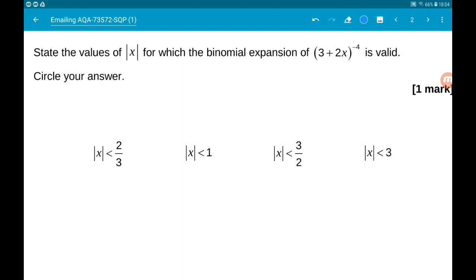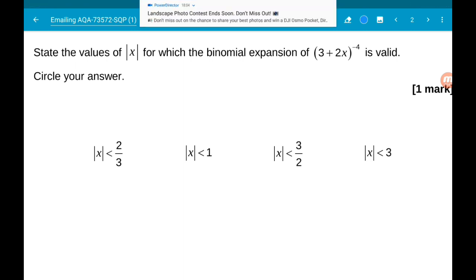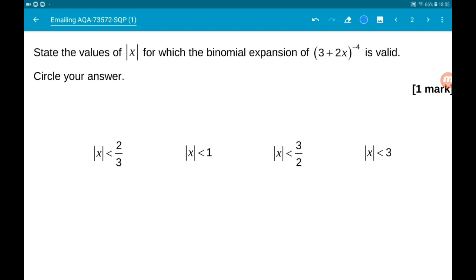So what we're going to do is say we've got 3 plus 2x to the minus 4, we're going to factor out that 3 at the start.